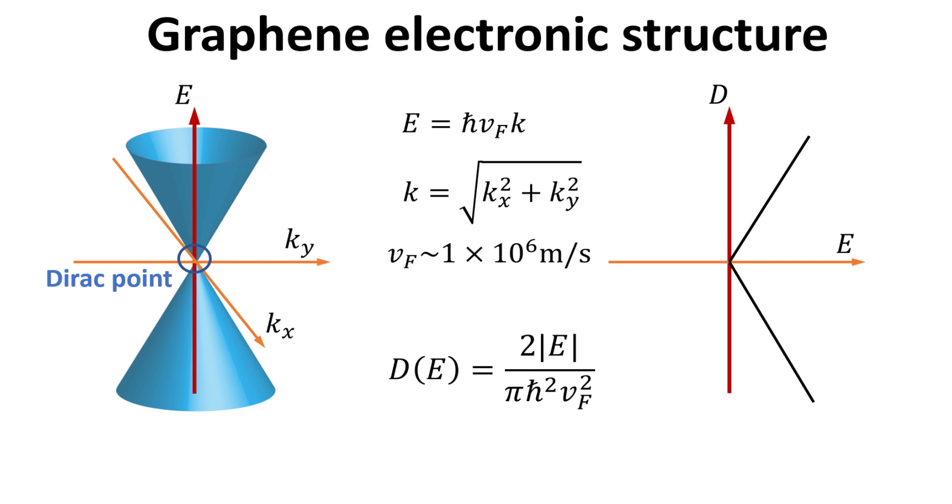Due to the linear dispersion in graphene, the electronic density of states is also linear in energy, with the expression given below, which we have also derived in a previous video.